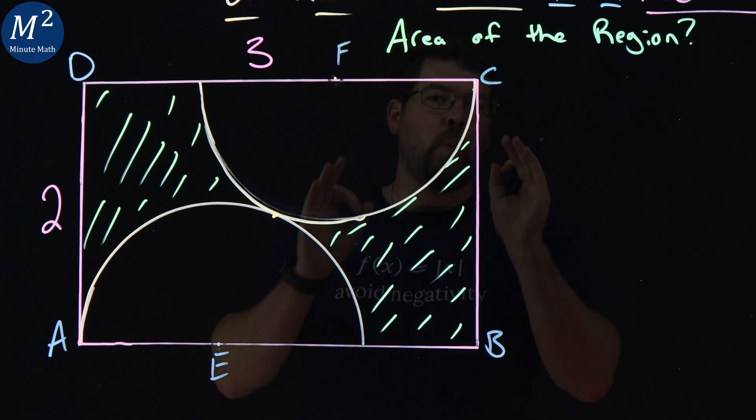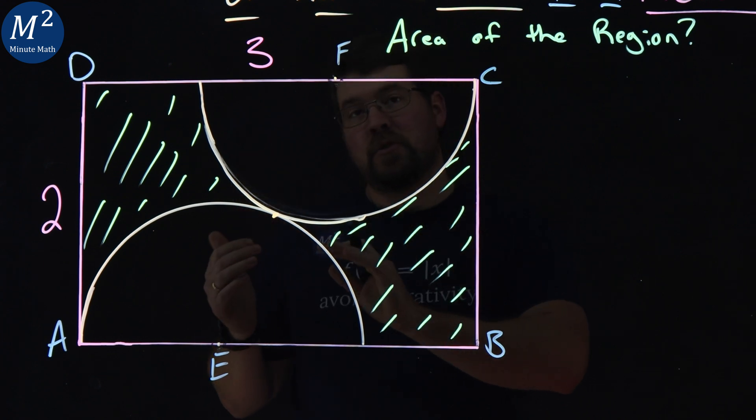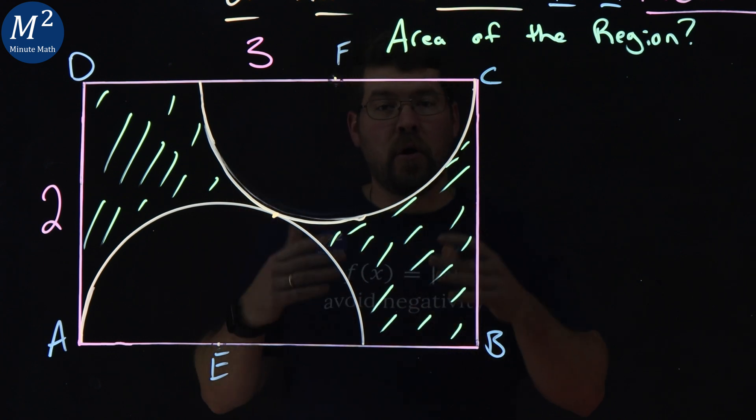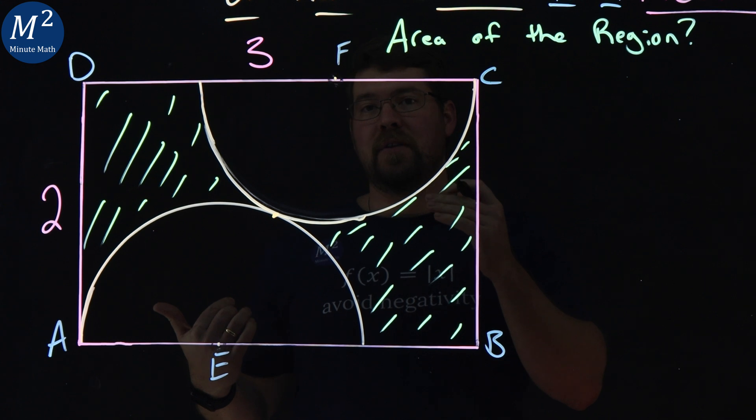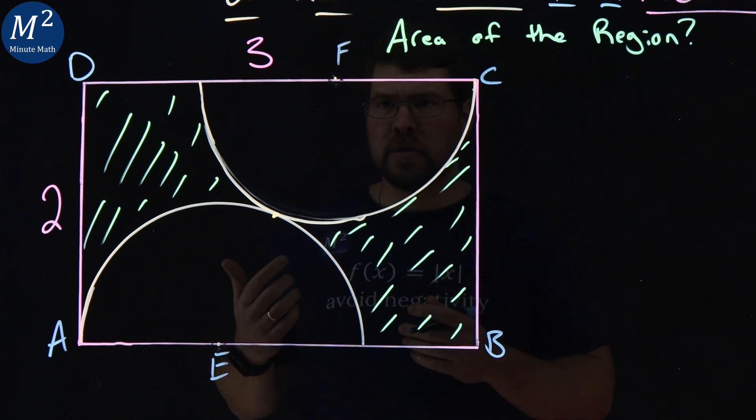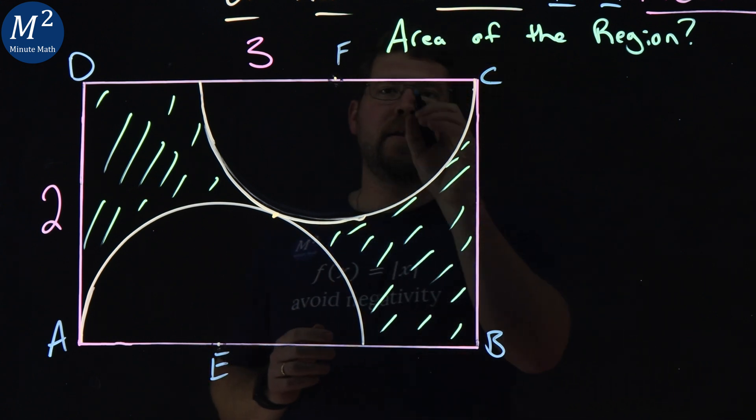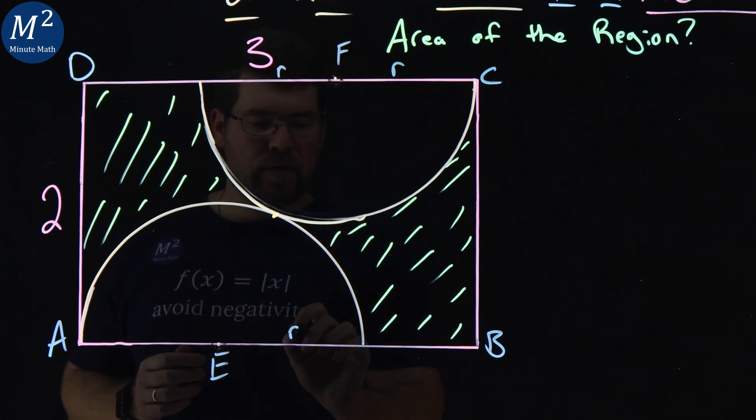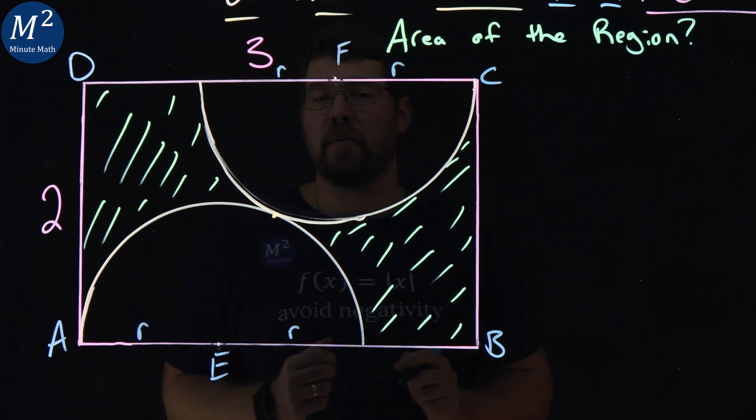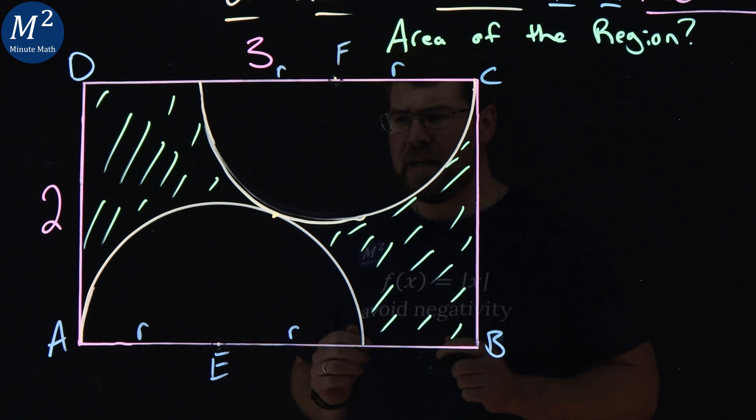We do not know what the length of each radius of these circles are. Now these two circles are the same size, or two half circles the same together make one full circle. So let's call that radius R, that distance here. And it's the same for each one.